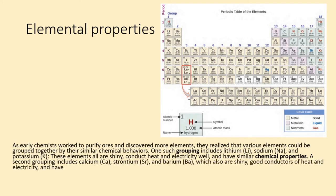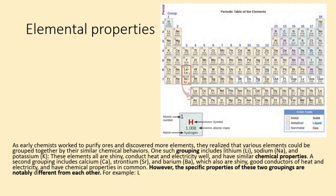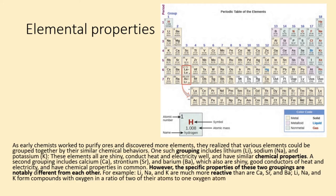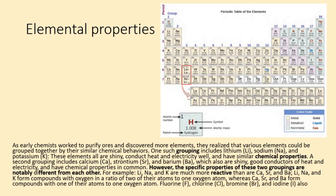A second grouping includes calcium (Ca), strontium (Sr), and barium (Ba), which also are shiny, good conductors of heat and electricity, and have chemical properties in common. However, the specific properties of these two groupings are notably different from each other. For example, Li, Na, and K are much more reactive than are calcium, strontium, and barium.